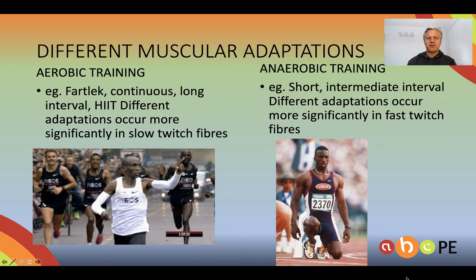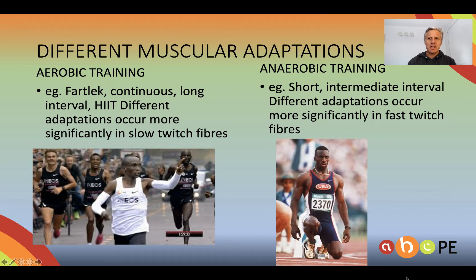We get different muscular adaptations depending on what type of training we're doing. With aerobic training such as fartlek and continuous, we'll get adaptations that occur more significantly in our slow twitch muscle fibres, whereas with anaerobic training such as short and intermediate interval training, we'll get different adaptations that occur mainly in the fast twitch muscle fibres.